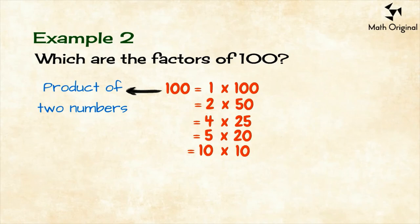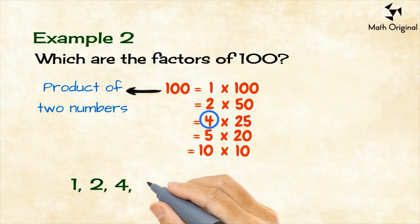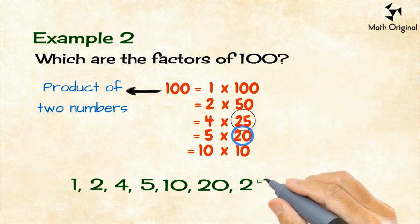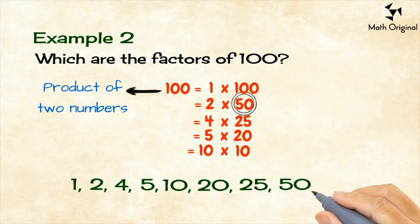Then, we don't have to try any other number since larger or equal numbers than 10 we have already found. So, all the factors of 100 are 1, 2, 4, 5, 10, 20, 25, 50, and 100.